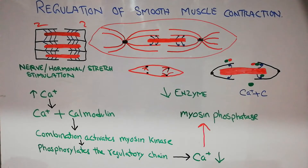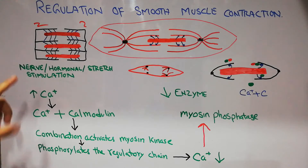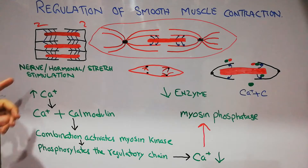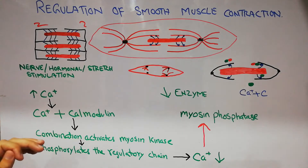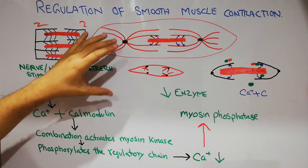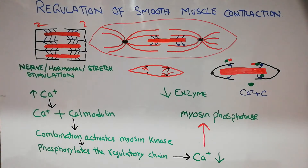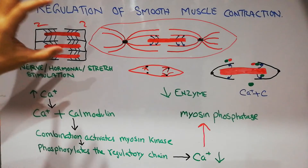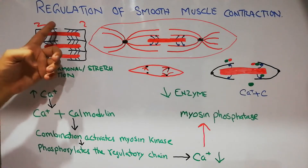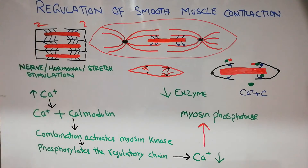The cross bridge heads of the myosin filaments work similarly to skeletal muscles. However, in skeletal muscles, contraction occurs only in response to nervous stimulation — only when a neuron activates the skeletal muscles do they start contracting. But in smooth muscles, any stimulus — whether nervous, hormonal, stretch of the smooth muscle, or changes in the environment — can activate the smooth muscle.